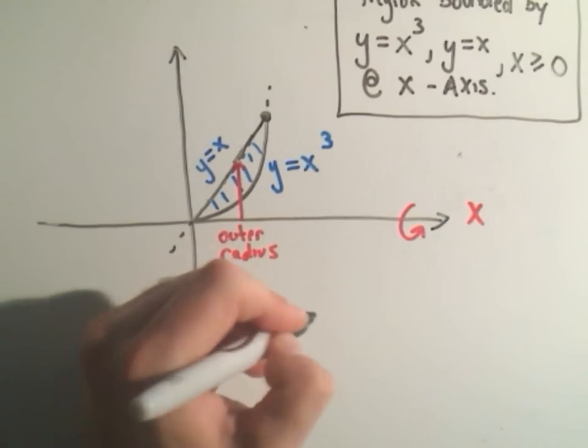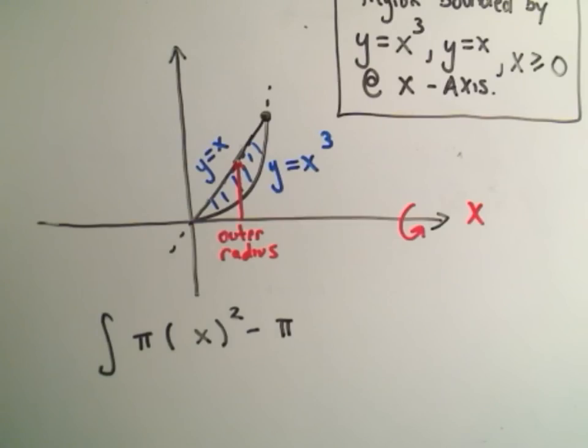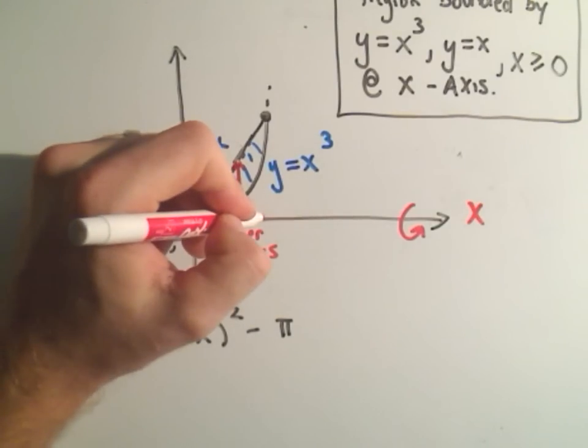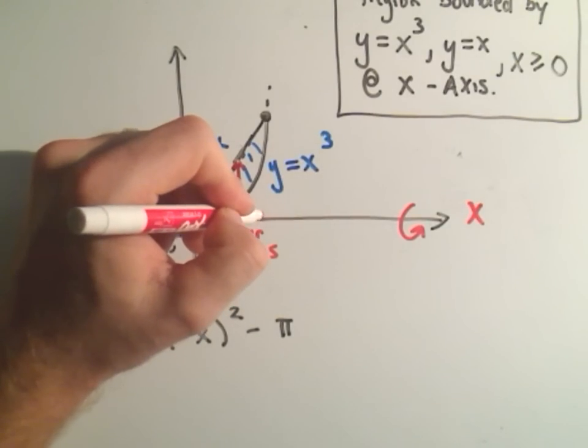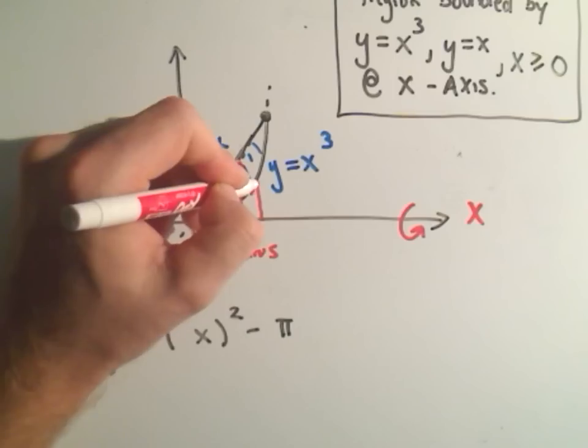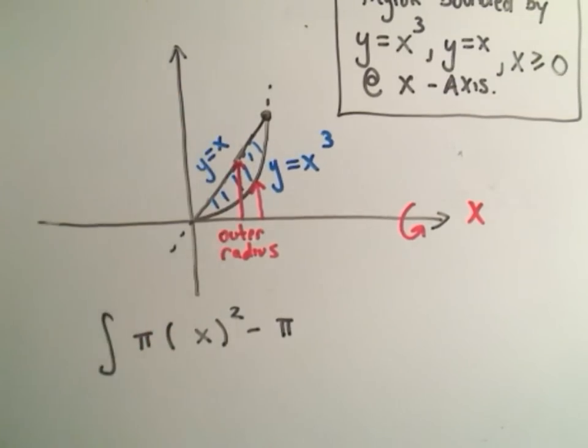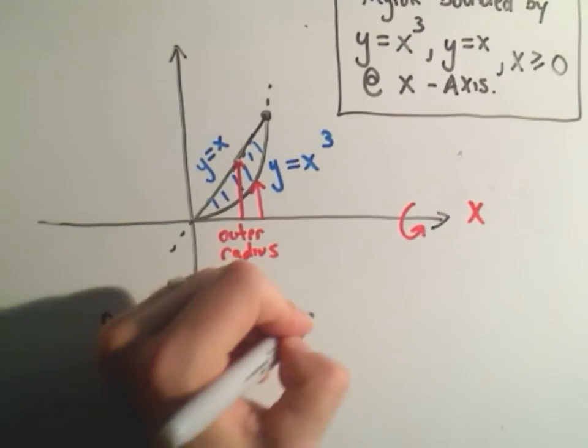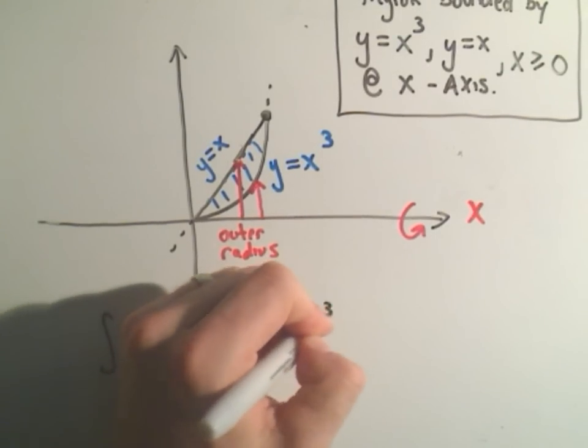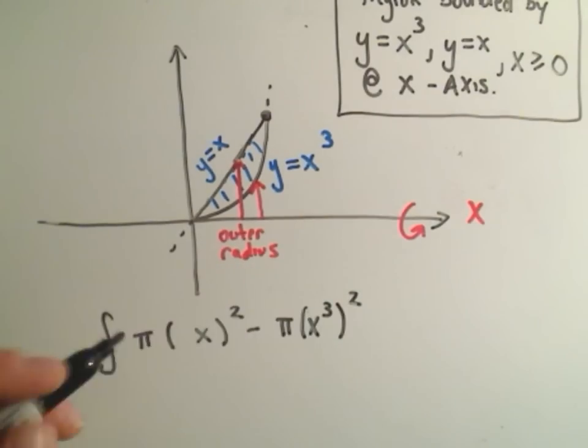Minus pi times the inner radius. Well again, I do the same thing. I start at the line I'm rotating about and I draw it until it just touches the region. And then in this case, I think well what curve is it hitting, the curve that it's hitting in this case is x cubed. But again, I have to square that.